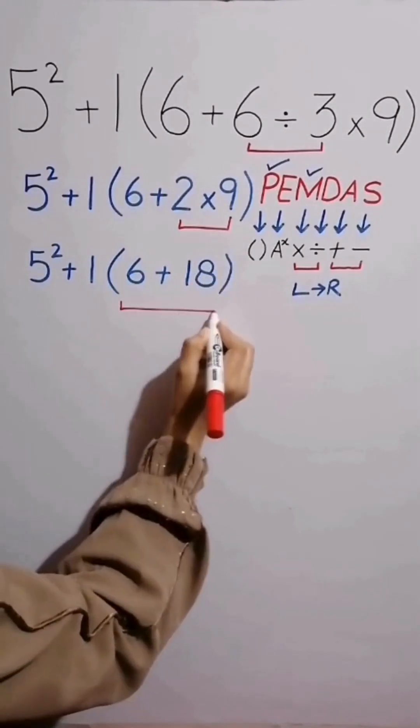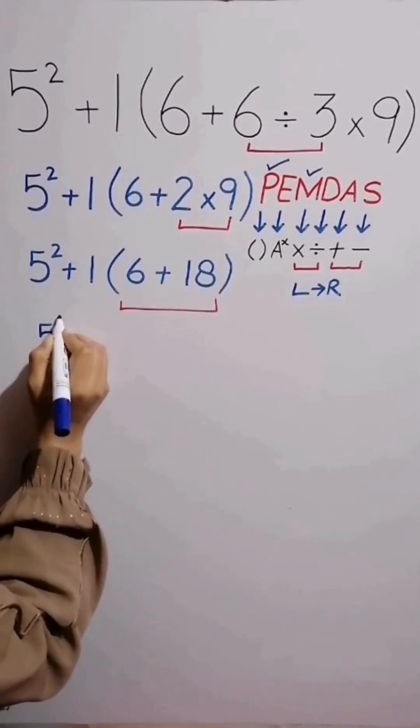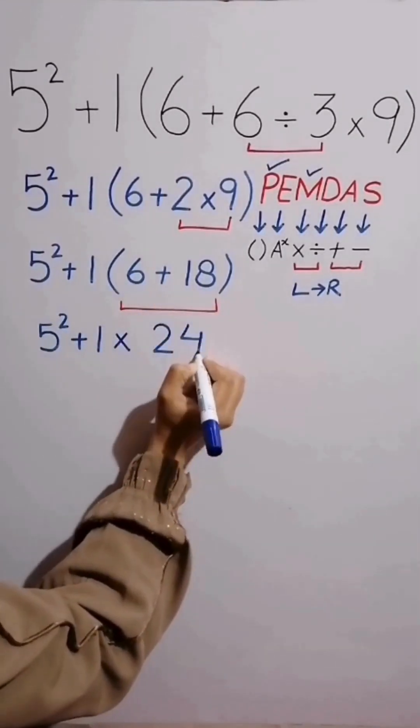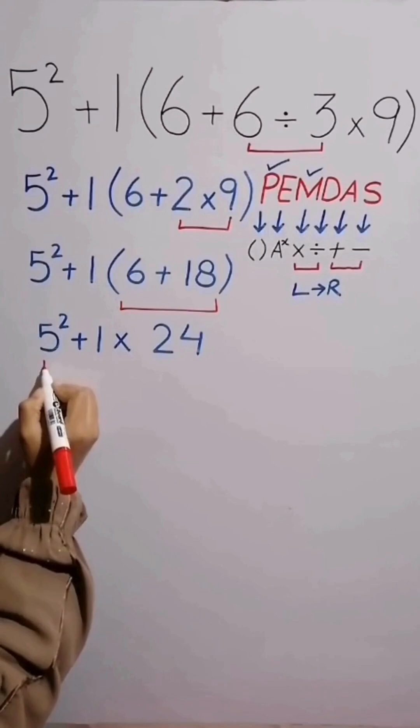Now we have 6 plus 18 inside the parenthesis. Bracket means multiplication and 6 plus 18 equals 24. Next we must perform exponent because after parenthesis, exponent has priority than all other operations.